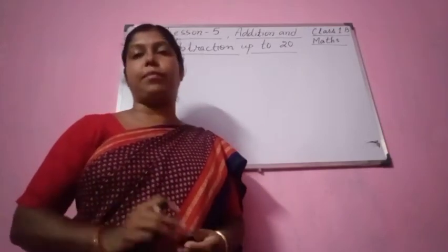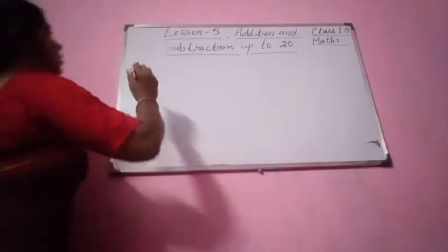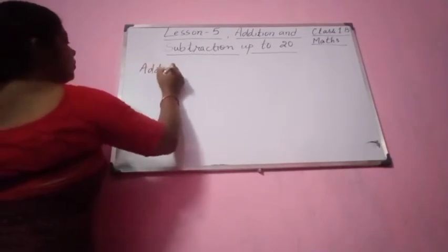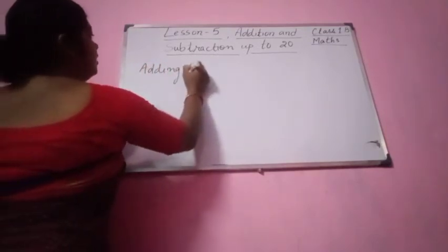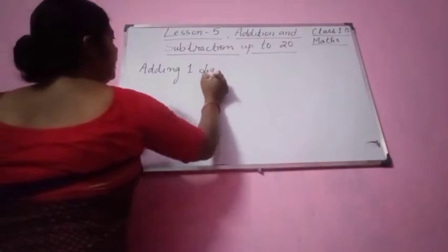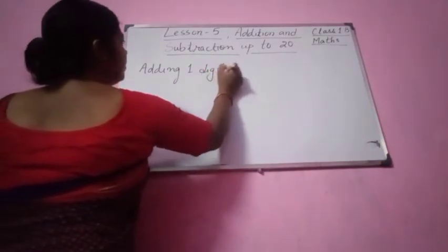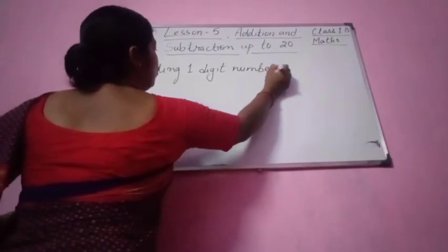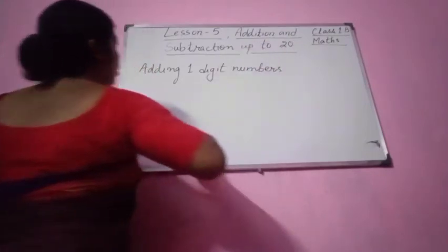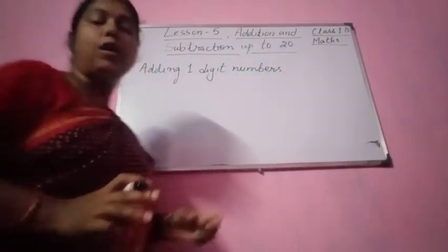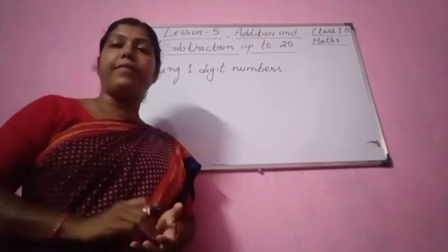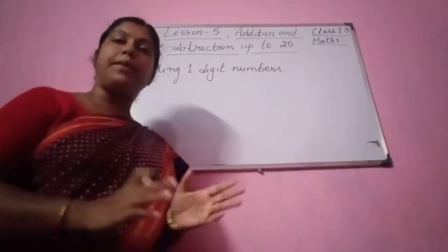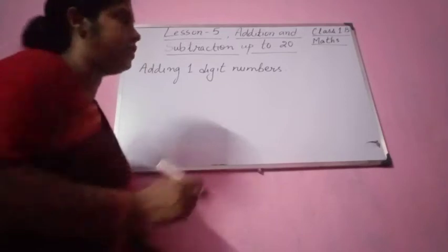We will be adding one digit numbers. Then we will be grouping it. First we are going to add one digit numbers and then we will be grouping it. We will separate it into 1s and 10s.